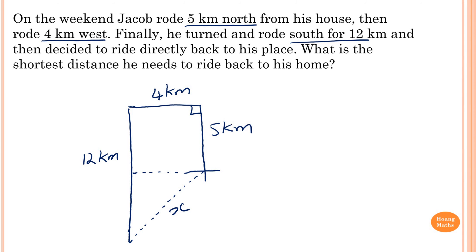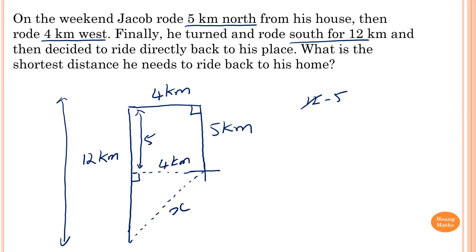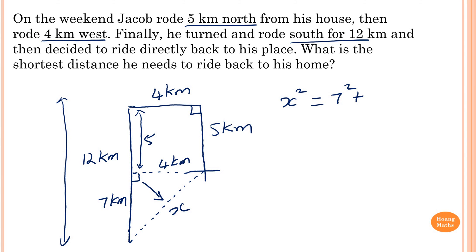The horizontal side of the right triangle is 4 kilometers. The vertical side: he went 5 km north then 12 km south, so the net vertical distance is 12 minus 5 equals 7 kilometers. Now to find x: x is the longest side because it's opposite the right angle, so x squared equals 7 squared plus 4 squared.